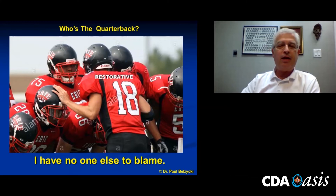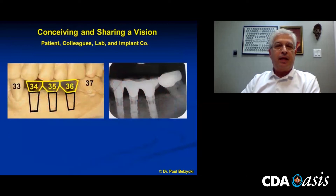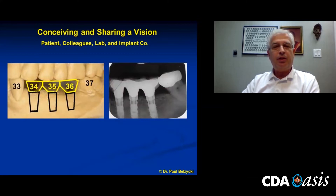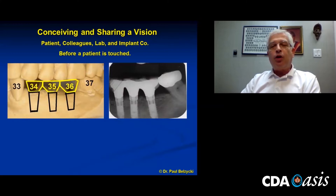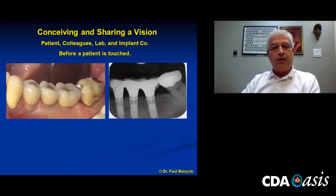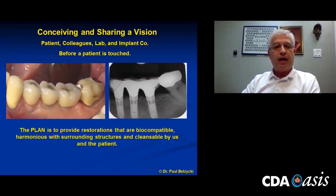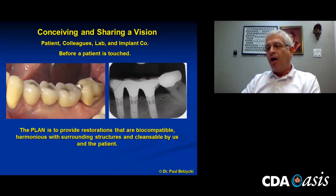You have to conceive and share a vision with the patient, colleagues, the lab, and implant companies, because they are often a good source of knowledge as well. You have to work it all out before a patient is touched — you have to know with a good degree of certainty what all the steps are to get over the goal line. In this case, we were converting from an RPD to some implant-supported crowns, which were splinted. The plan is always to provide restorations that are biocompatible and harmonious with surrounding structures, and they have to be cleansable — by both us and the patient. If embrasures are too tight and the patient can't clean, it's going to fail.